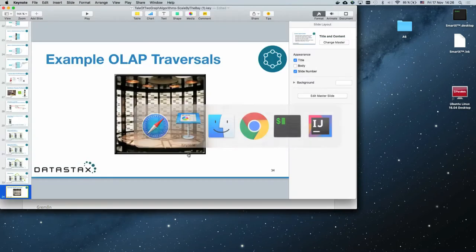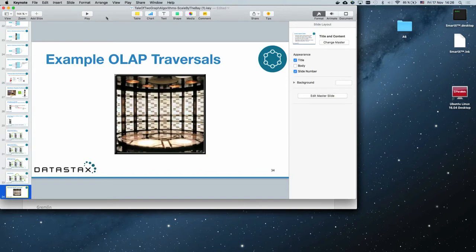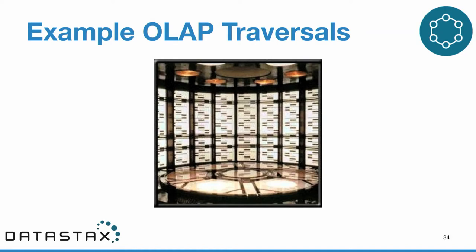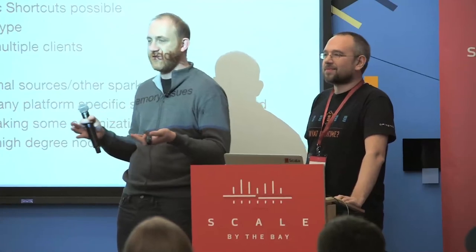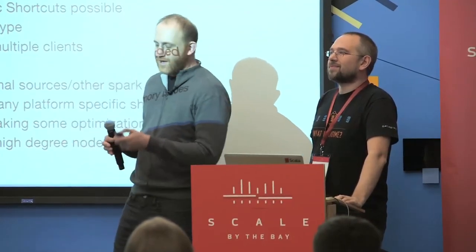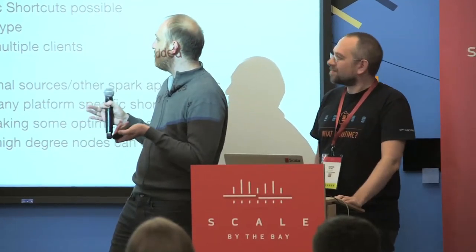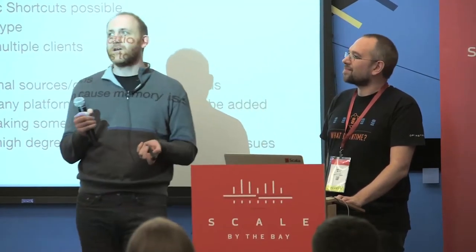Obviously doing this kind of traversal using TinkerPop has pros and cons. The main pros: every time we do a message pass in TinkerPop, we only have to do a single shuffle because we have that pair RDD representation and already know the identity of every vertex we're sending a message to. Edge properties are also directly accessible without a step — no shuffle needed to look up an edge value. It's very flexible because the language allows for many things to be composed, and arbitrary code can run inside the library using basically any Java type.